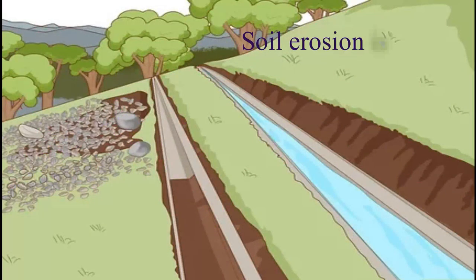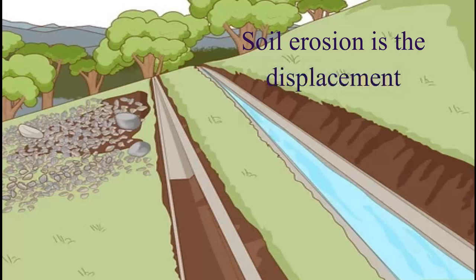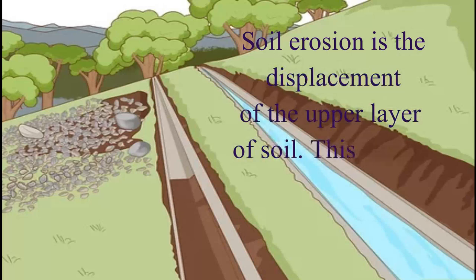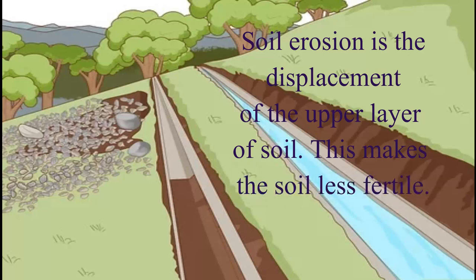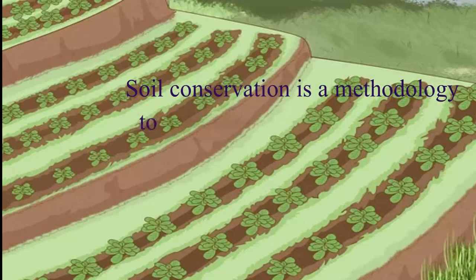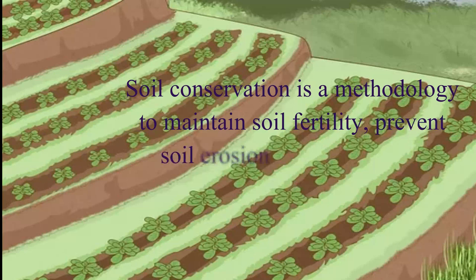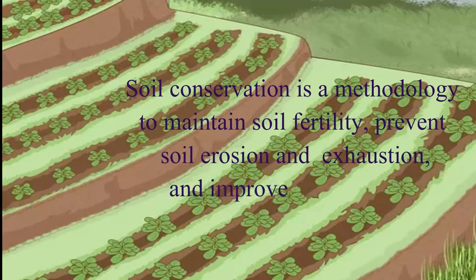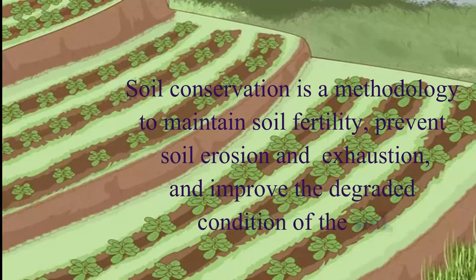Soil erosion is the displacement of the upper layer of soil, which makes the soil less fertile. Soil conservation is a methodology to maintain soil fertility, prevent soil erosion and exhaustion, and improve the degraded condition of the soil.